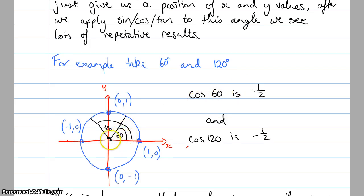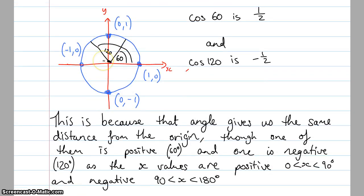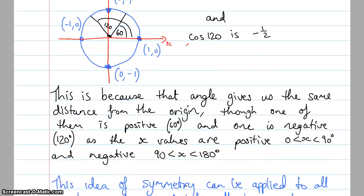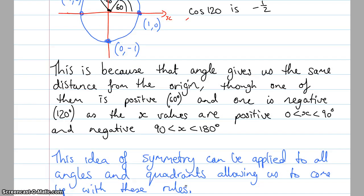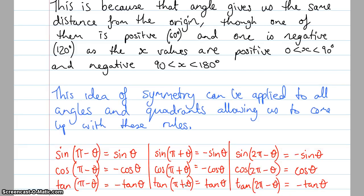That means the x value there is a half. And cos of 120 is actually going to be negative a half. So we can actually say that the angle gives us the same distance from the origin in the x direction. Though one of them is positive, the 60 degree one, and one of them is negative, as the x values are positive between 0 and 90, and negative between 90 and 180. This idea of symmetry can be applied to all the angles and quadrants, allowing us to come up with these rules. You don't need to learn all these rules. You just need to understand the theory behind them.